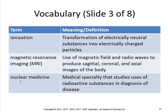Ionization is the transformation of electrically neutral substances into electrically charged particles. MRI, or magnetic resonance imaging, uses a magnetic field and radio waves to produce sagittal, coronal, and axial images of the body. Make sure you know when to use a CT scan, an MRI, and a PET scan.